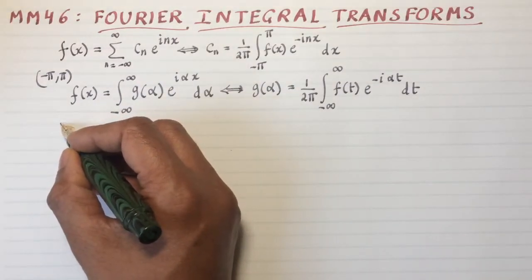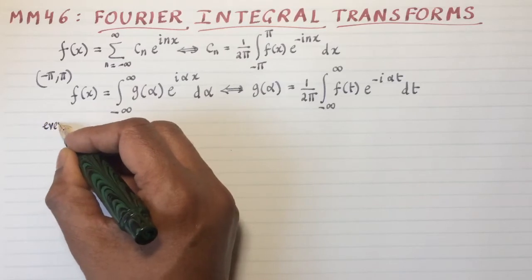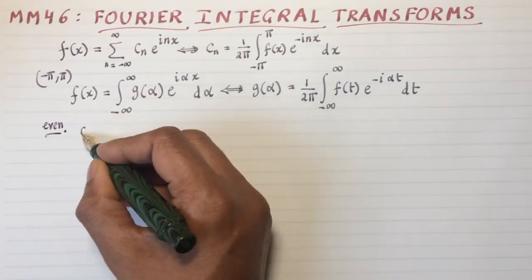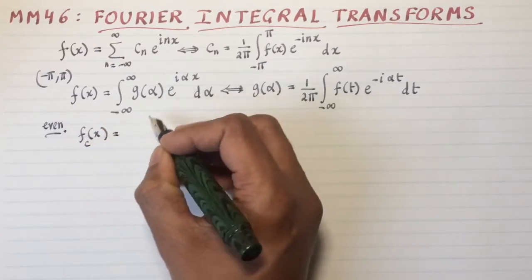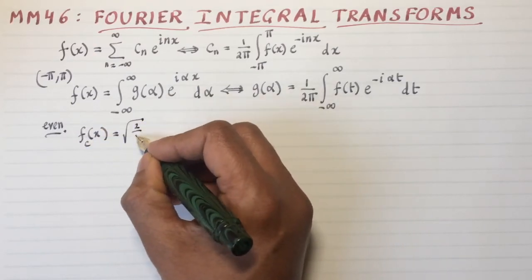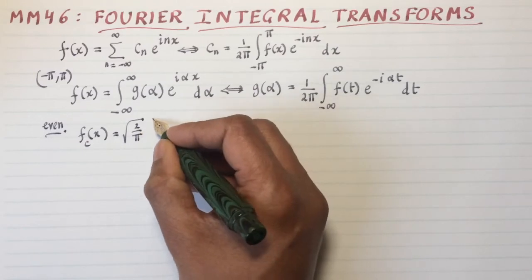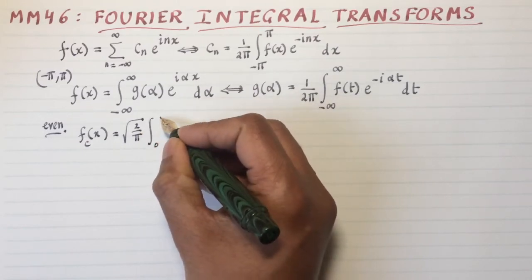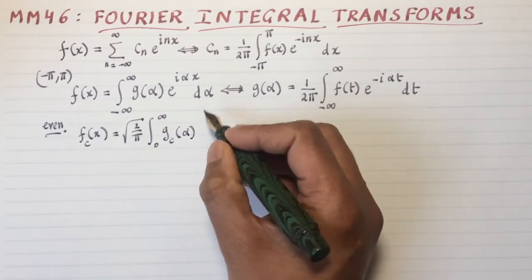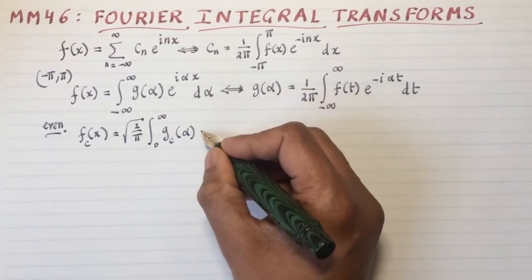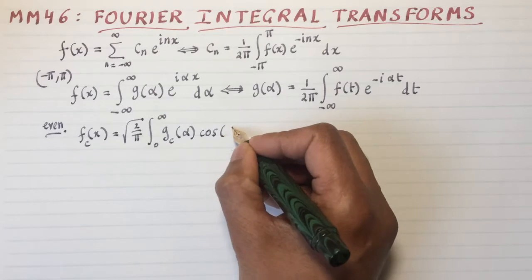If I have an even function, then the cosine transform is got by writing fcx equals the square root of 2 over pi. The normalization has become a little nasty, that's all. Integral 0 to infinity of g cosine alpha. And instead of e to the i alpha x, I'm going to just simply get cosine alpha x d alpha.